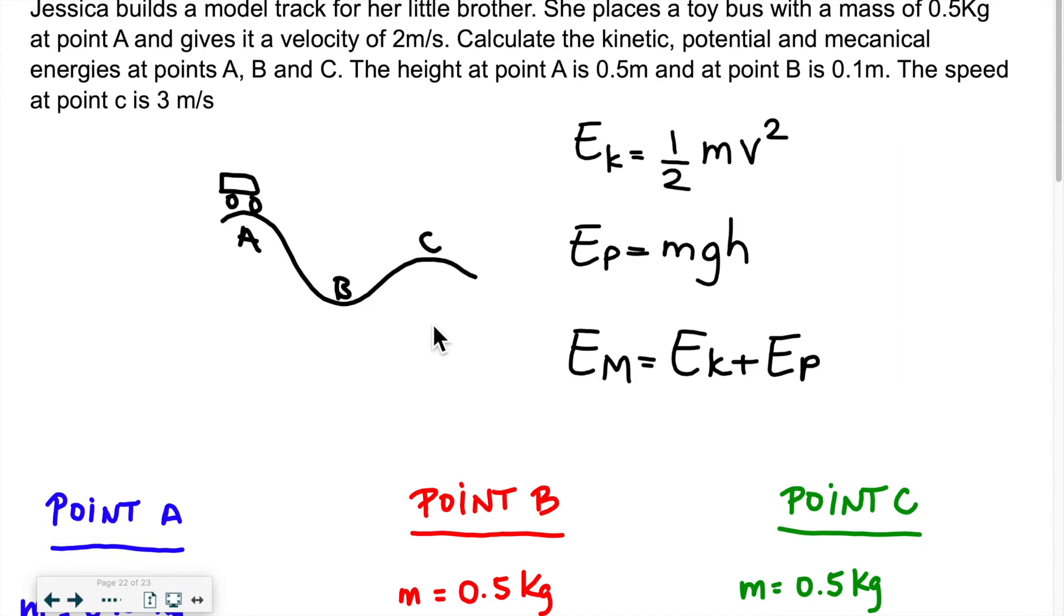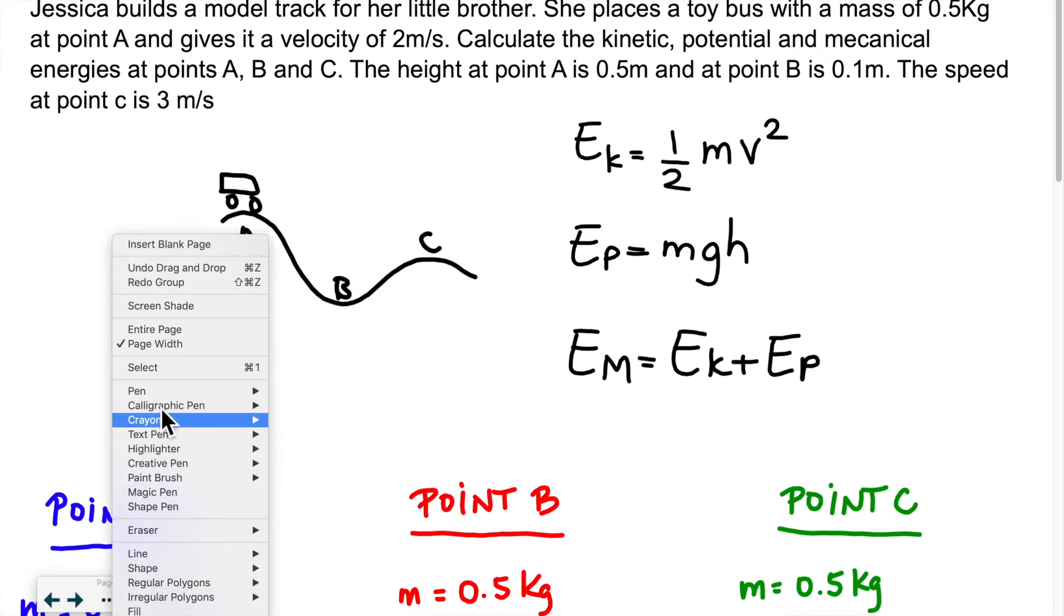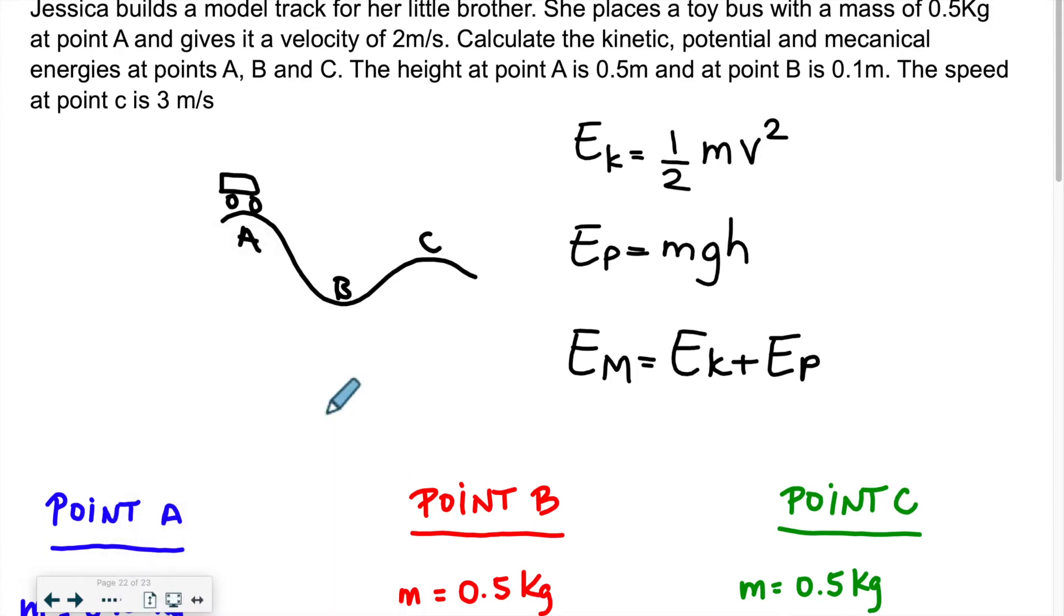Now that we have the sketch and the three equations we're going to be working with, we need to list the information that we have. Since we need to calculate for A, B, and C what the potential kinetic and mechanical energies are, what we should do is list the information according to those points. I color-coded things just to make it easier to follow because there is a lot of info to work with.